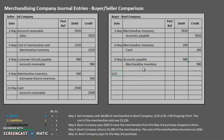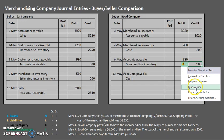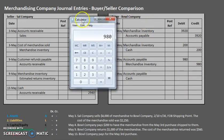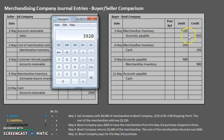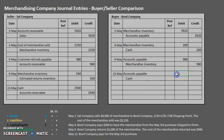On May 13th, the buyer pays for the May 3rd purchase. Accounts Payable goes down since we are paying off our debt, and Cash also goes down since we are paying. The current balance in Accounts Payable was originally $3,920, but we decreased it by $980 when we returned some goods, so the amount of cash we are paying is $2,940. You'll notice this amount coincides with what the seller was receiving — the seller receives whatever the buyer pays; they must match up.